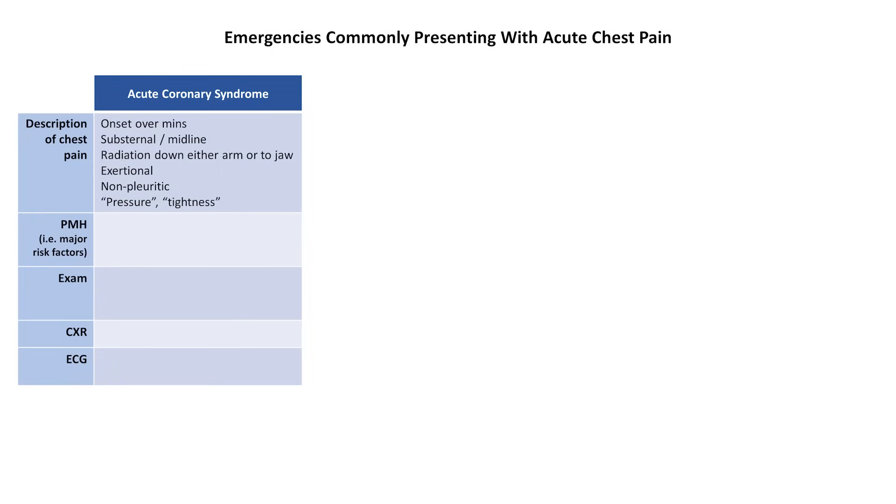Risk factors the patients may have could include smoking, diabetes, hypertension, or hyperlipidemia. The physical exam is often normal, but on occasion may reveal an S3, elevated JVP, and lung crackles if the patient has already developed secondary heart failure.